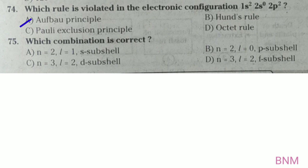Next, which combination of quantum numbers is correct? Option C: n=3, l=2 corresponds to a d orbital. This is a correct statement. C is the right answer.